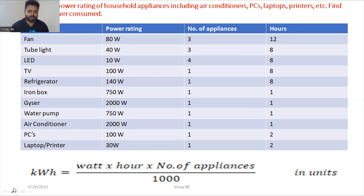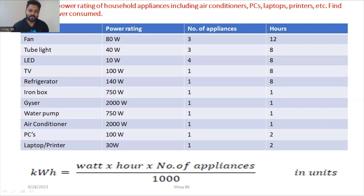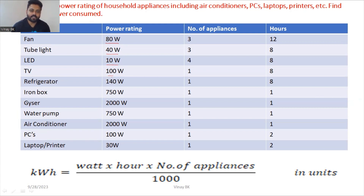To calculate units, you need to know the power rating of each appliance: fan 80W, tube light 40W, LED 10W, TV 100W, refrigerator 1400W, iron box 750W, geyser 2000W, water pump 750W, AC 2000W, PC 100W, laptop 30W. The formula is: kilowatt hour = power rating (watts) × number of appliances × total hours used ÷ 1000.